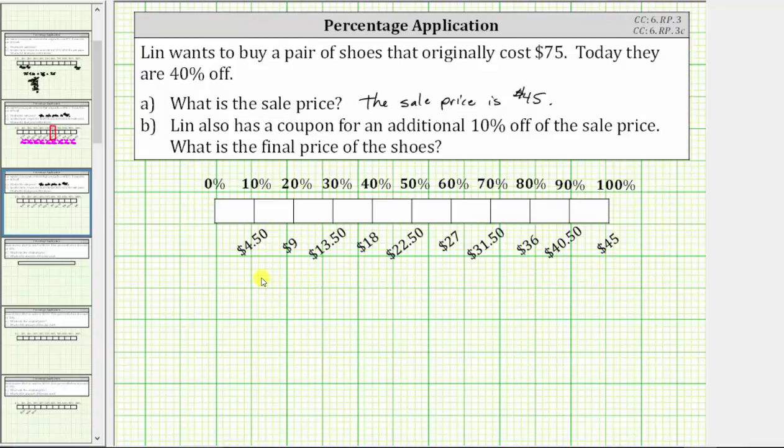And we can now see from the tape diagram, Lynn will save an additional $4.50 with the additional 10% off of the sale price. But the question asks, what is the final price of the shoes?